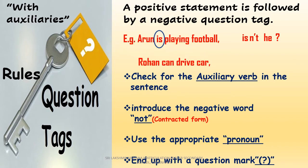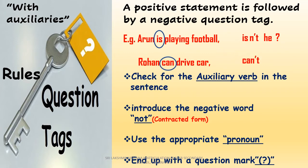Look at another example: 'Rohan can drive a car.' Here we find the modal verb 'can,' and the sentence is a positive one, so we need to add 'not.' The contracted form of 'cannot' is 'can't.' Followed by the subject pronoun 'he,' and end with a question mark: 'can't he?'